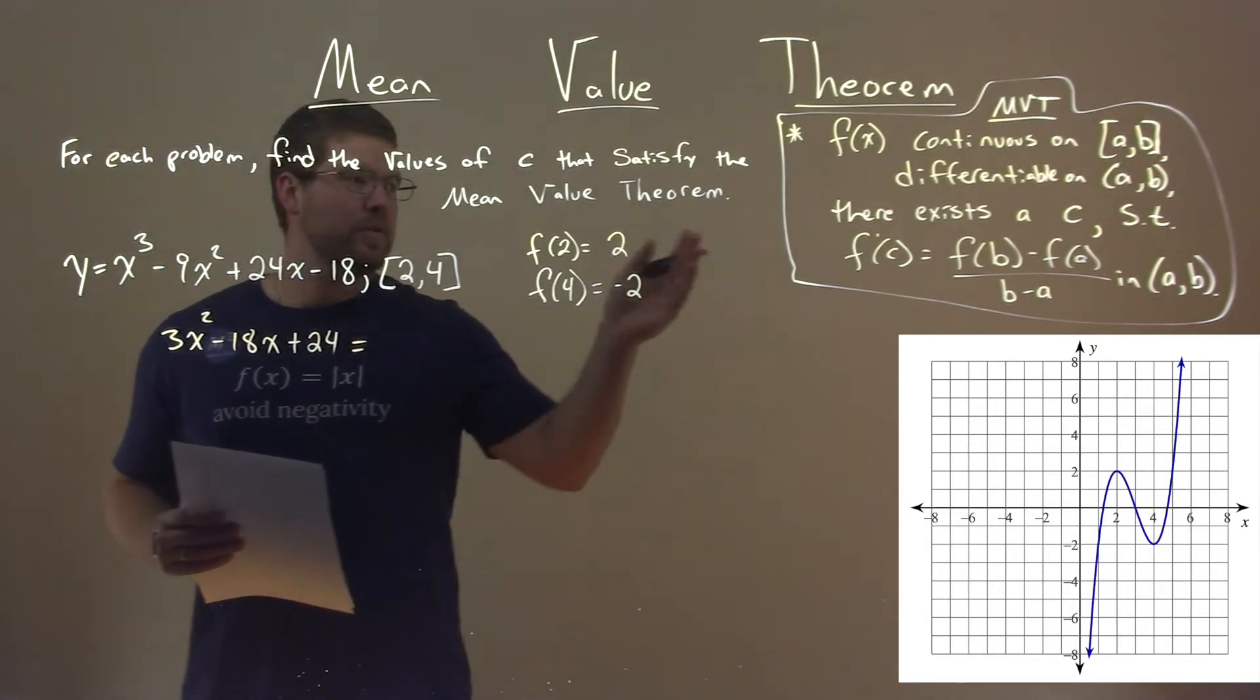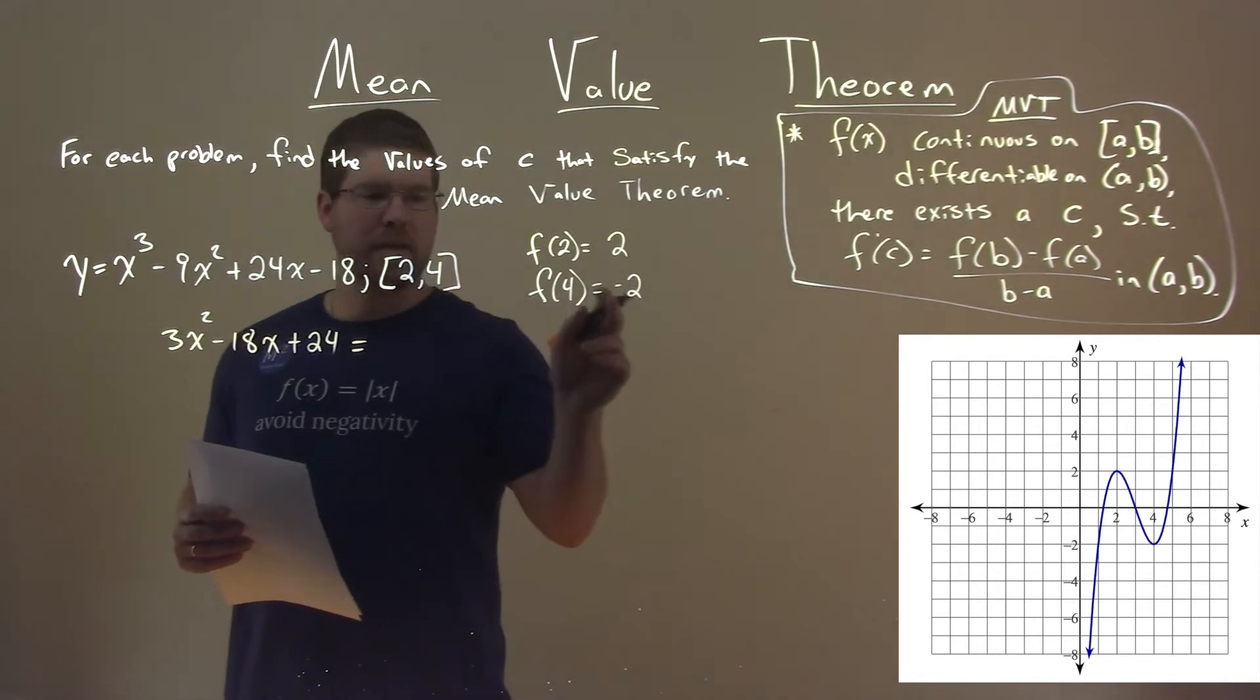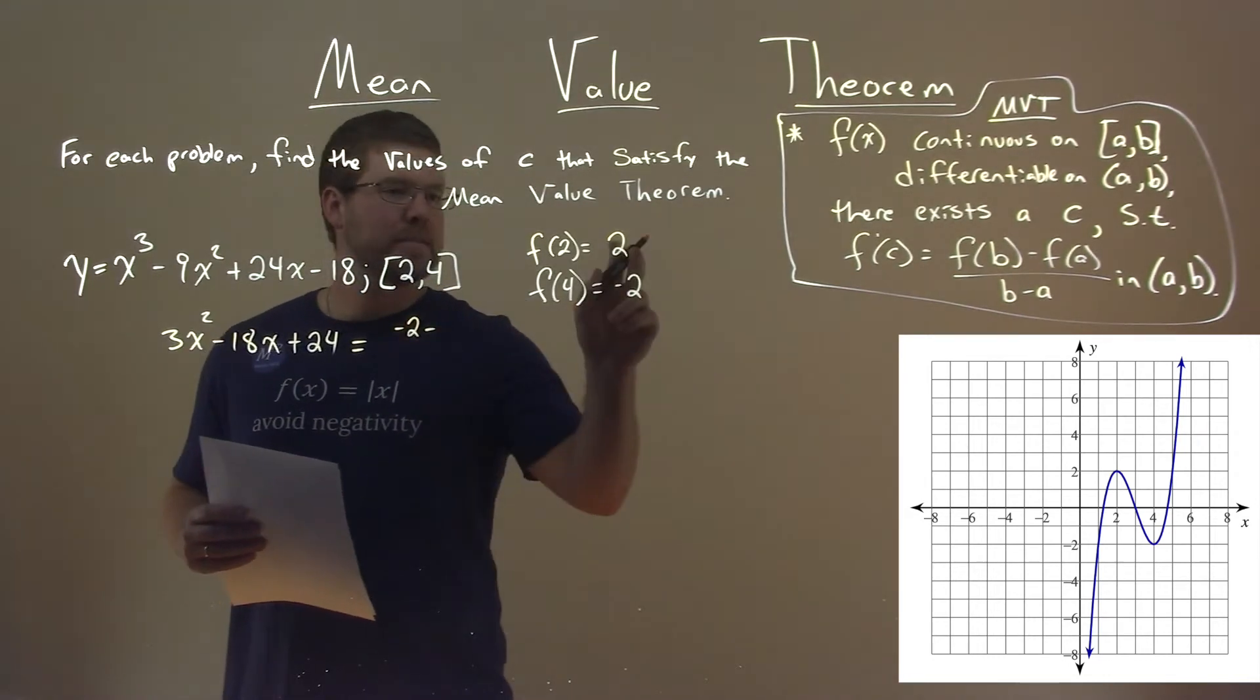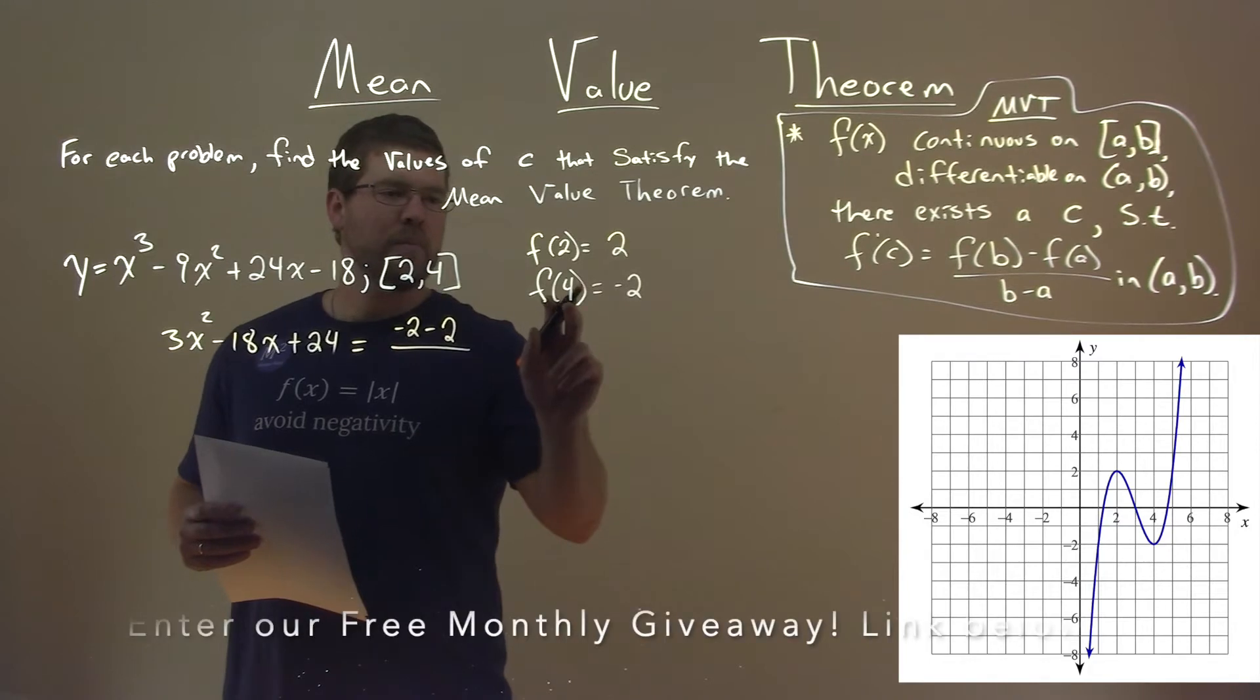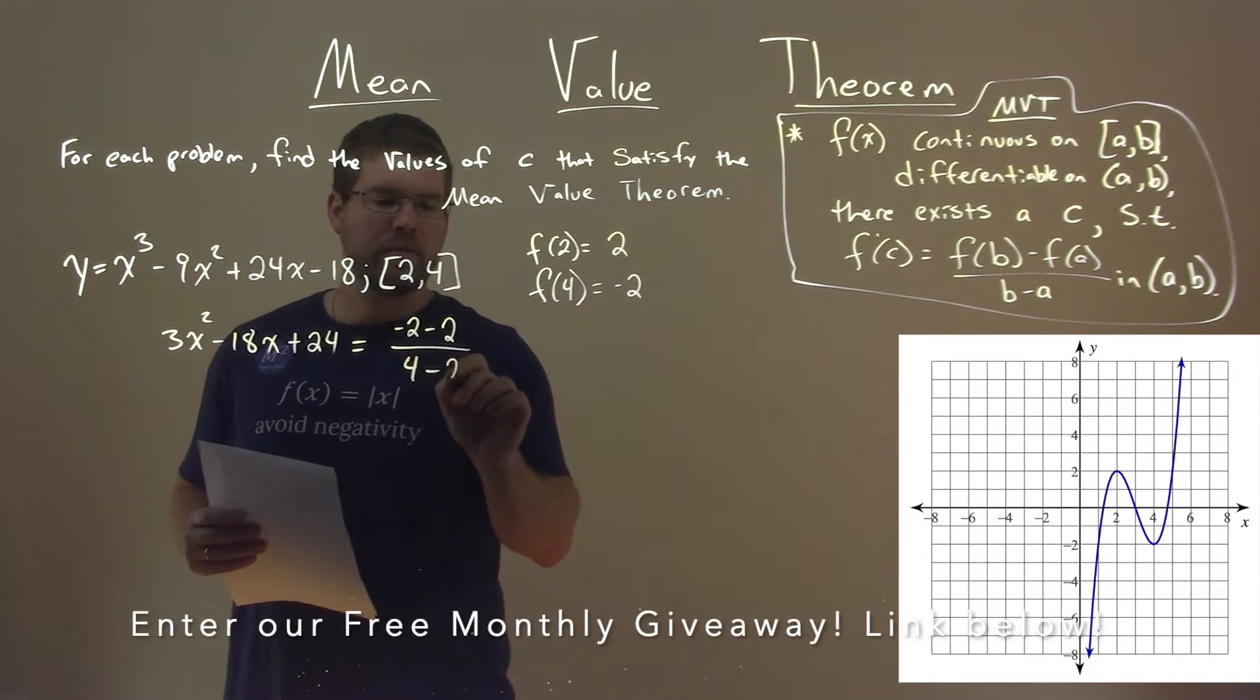We set it equal to, using our formula, f of b, negative 2, minus f of a, 2, all over b minus a, 4 minus 2.